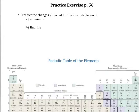This is a practice exercise from page 56 of the textbook. We're going to learn how to use the periodic table to predict charges on ions. First thing we need to understand is what an ion is. An ion forms when we gain or lose electrons.